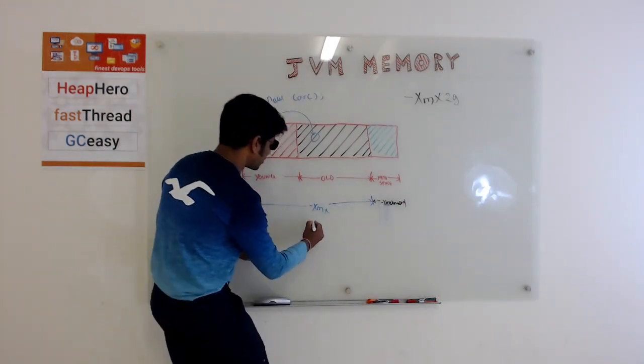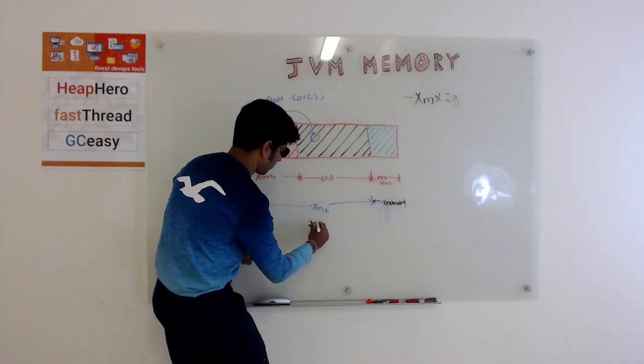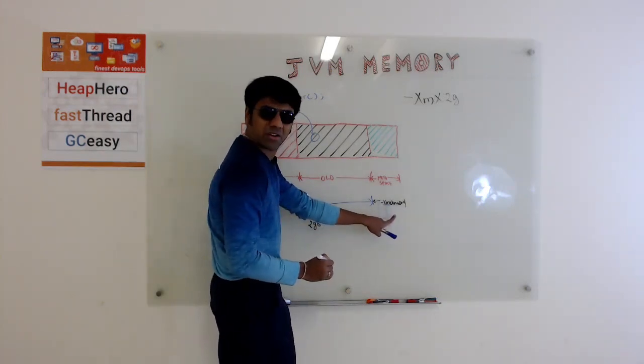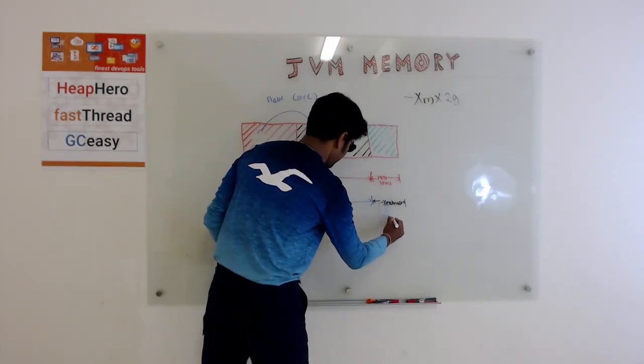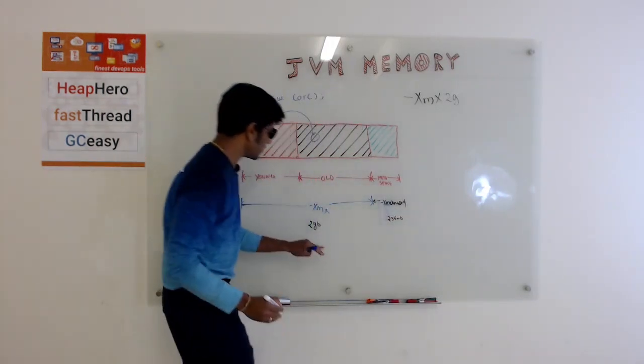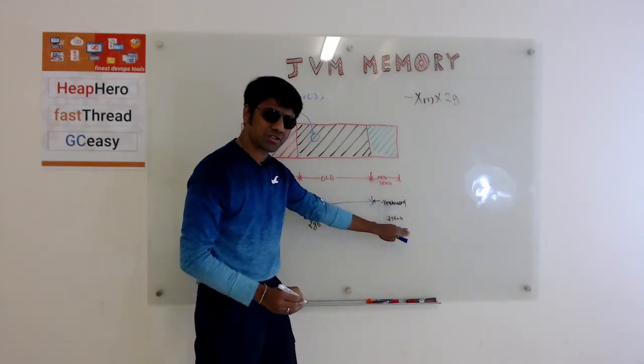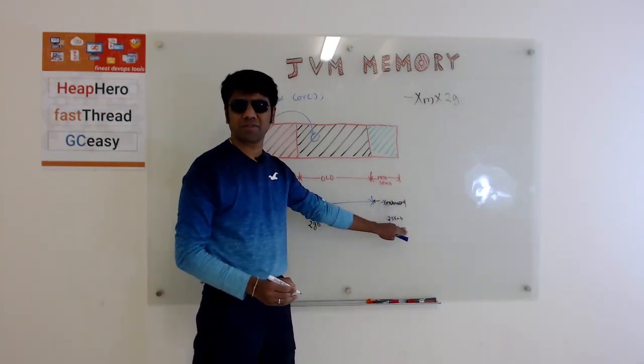So suppose if you are defining this to be 2 GB, this max metaspace you can define as something like 256 MB. That means this is 2 GB plus this 256 MB. It's going to go beyond what you have defined in XMX.